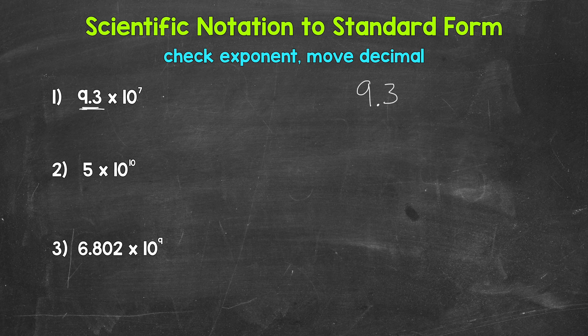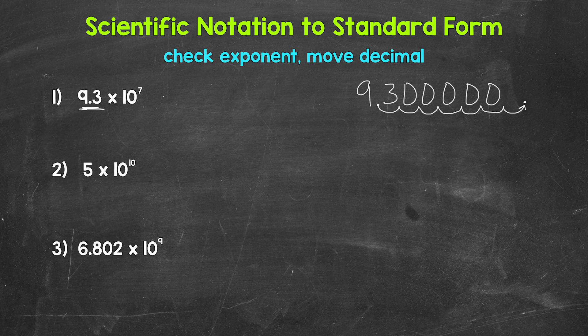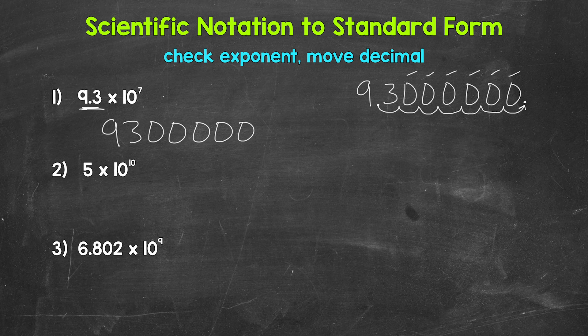Let's move this decimal 7 places to the right: 1, 2, 3, 4, 5, 6, 7. Now we can fill those gaps with zeros. And that's our standard form. Let's rewrite this a little neater — we have 93, and then 6 zeros. Then we can put in the commas — a comma here and here. So we have 93 million. And we are done. That's our standard form. All we need to do is check the exponent and move the decimal.